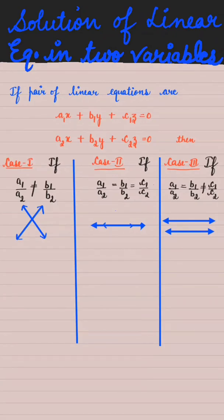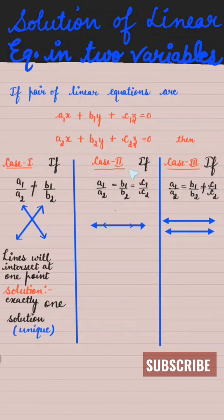Then lines will intersect at one point and it has exactly one solution, that is a unique solution. Case 2: if a1 over a2 is equal to b1 over b2 is equal to c1 over c2, means ratio of coefficient of x, coefficient of y, and coefficient of z, all three ratios are equal.